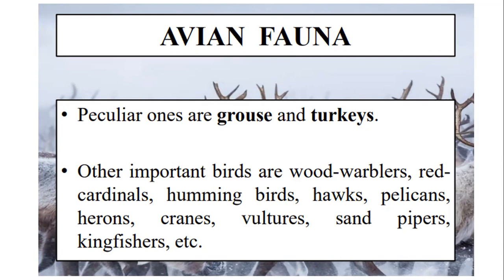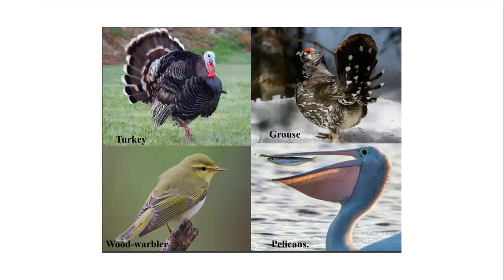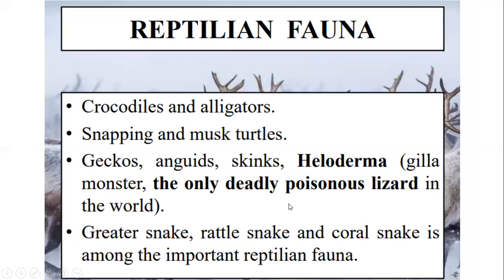Regarding avian fauna, the peculiar endemic species are grouse and turkeys, but other birds are also important to this region. For example, wood warbler, red cardinals, hummingbird, hawk, pelican, heron, crane, vulture, sandpiper, and kingfisher. All these birds are common to this region, but grouse and turkey are peculiar and endemic. Here on screen you can see a turkey, rose, wood warbler, and pelican.